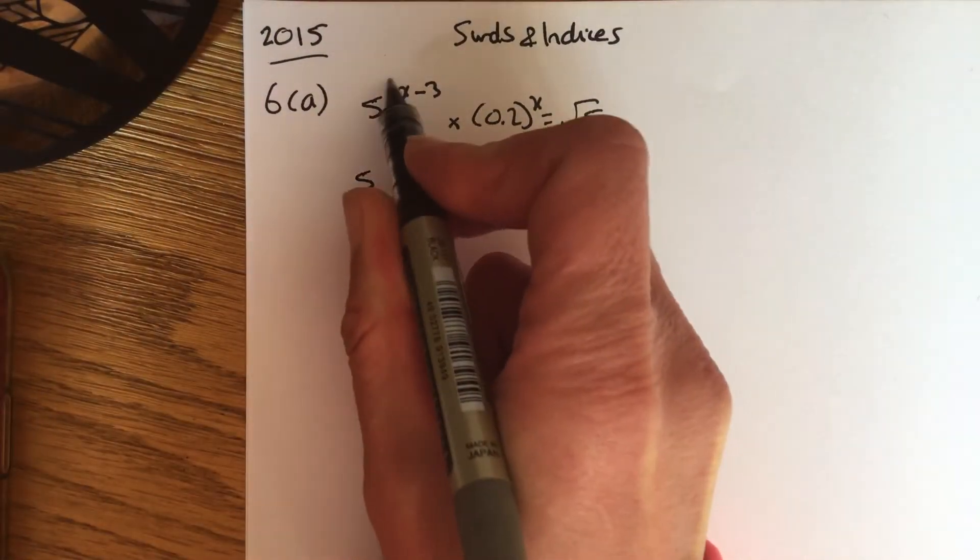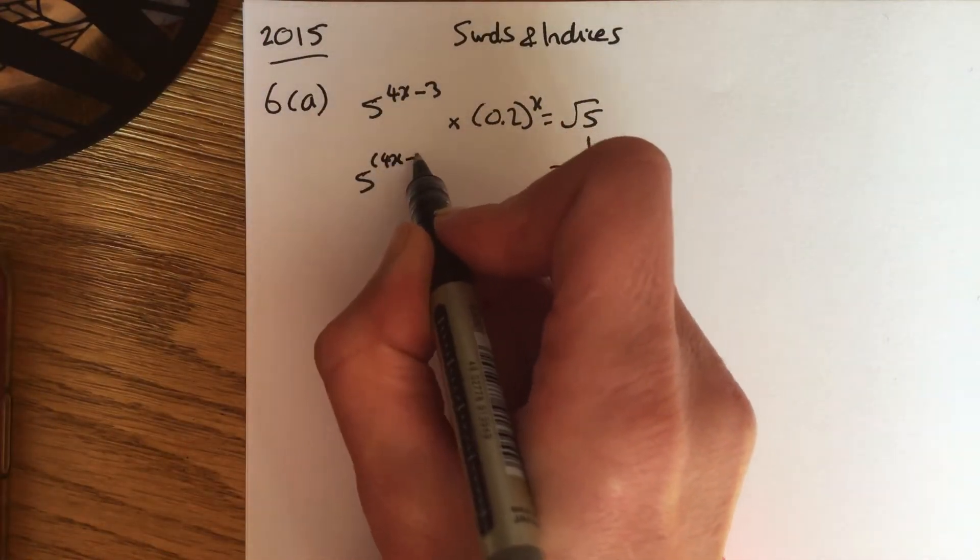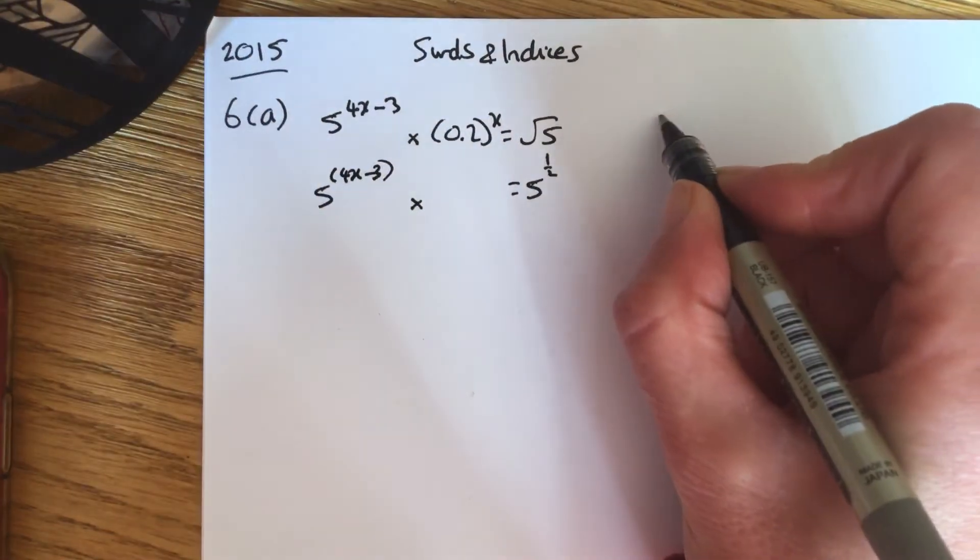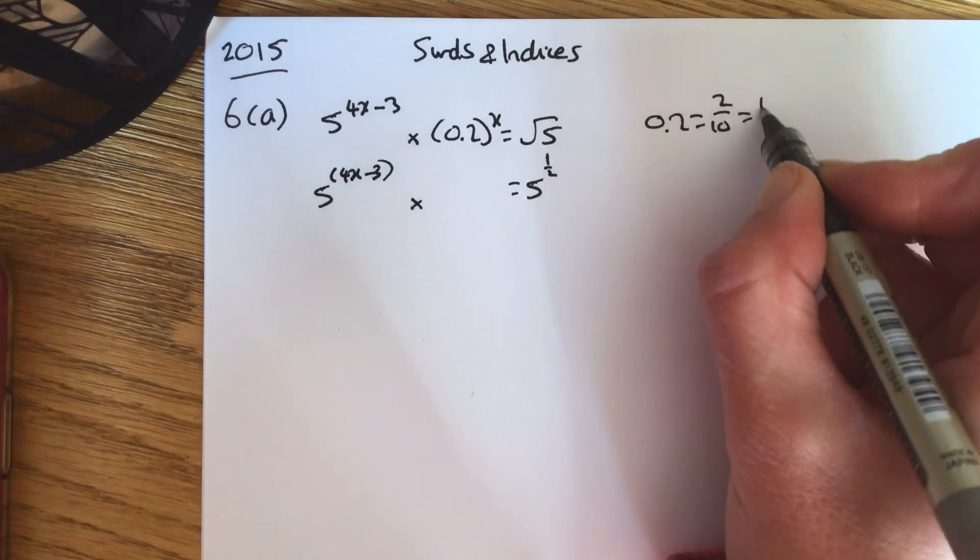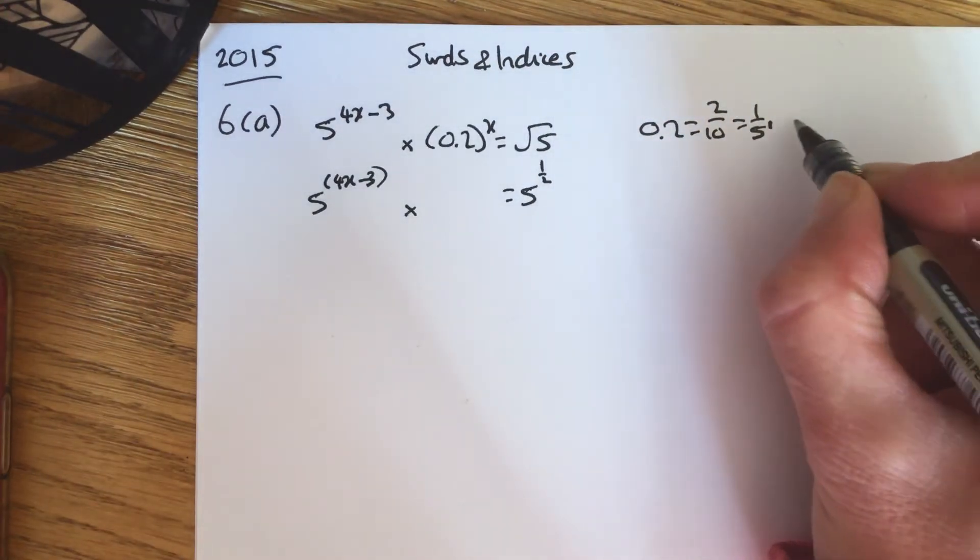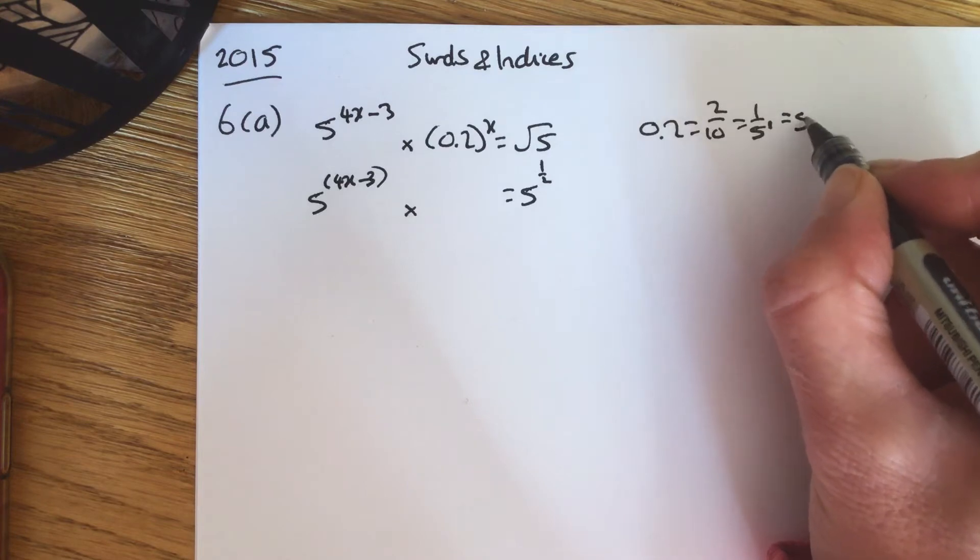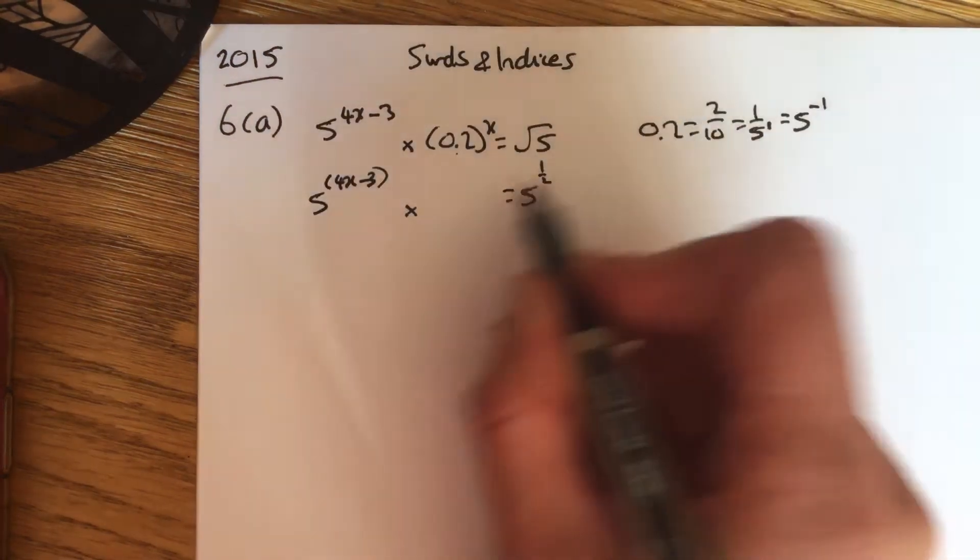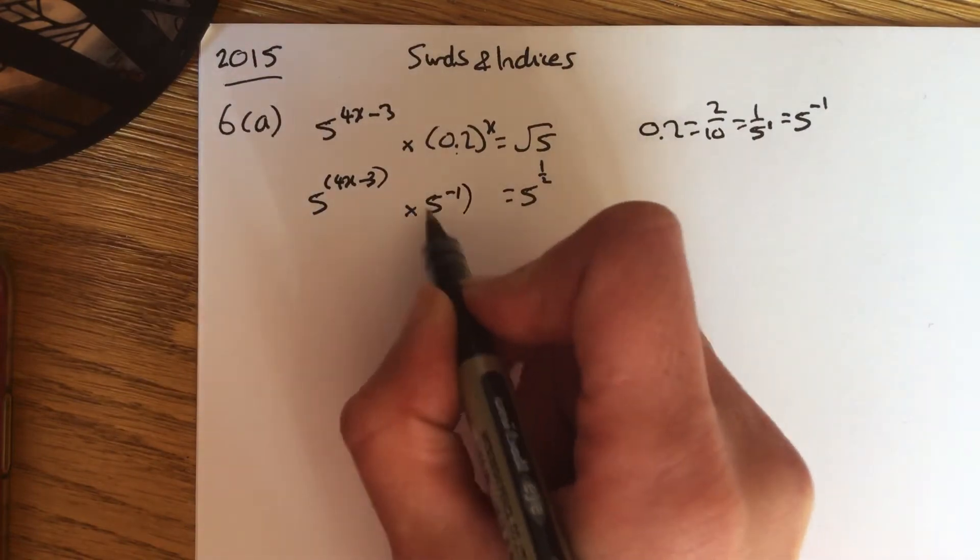For the first 5, I'm just going to put brackets around that because it's more than one term. Now, 0.2, if you remember, 0.2 is the same as 2 over 10, which is the same as 1 fifth. That's the same as 1 over 5 to the power of 1, and you can bring that up to the top line by putting it as a minus power. So I'm going to write 0.2 as 5 to the minus 1x.